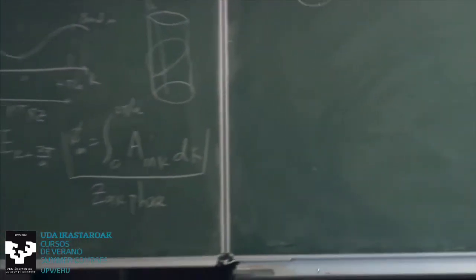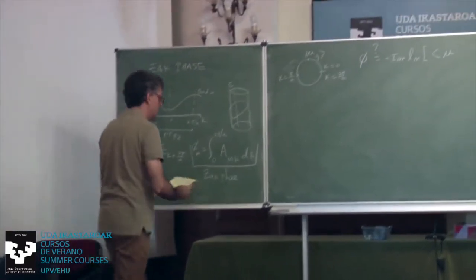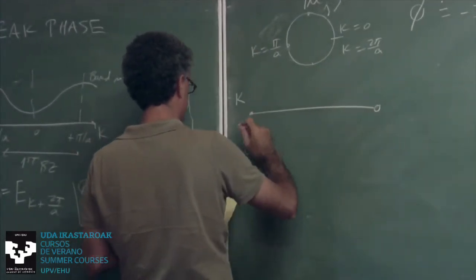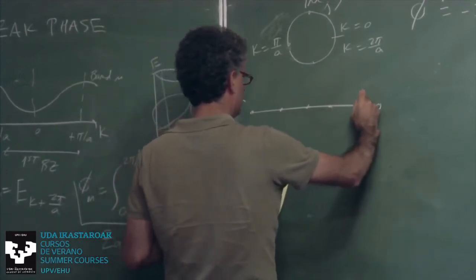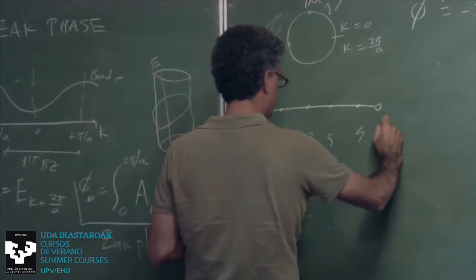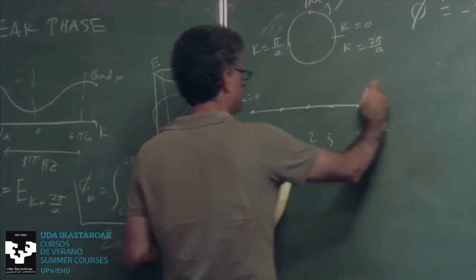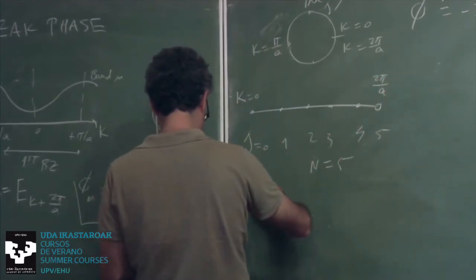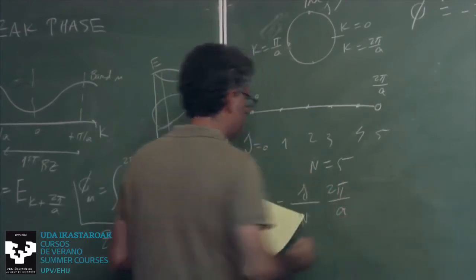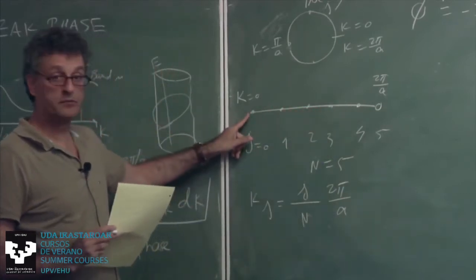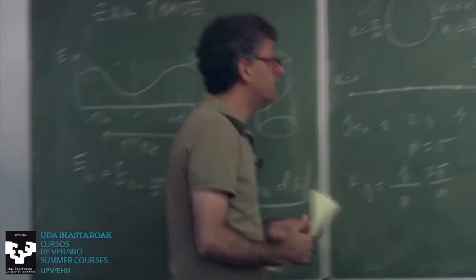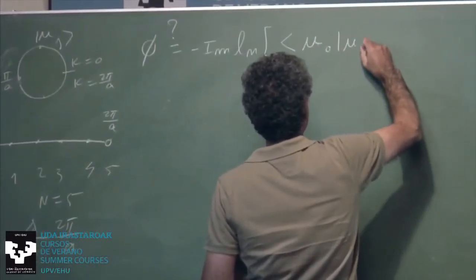Let me introduce some notation. Let's say j = 0, 1, 2, 3, 4, 5, so N equals 5, and k goes from 0 to 2π/a. So I have a uniform mesh of k-points going from one end of the Brillouin zone to the other. Can we write the following in complete analogy?